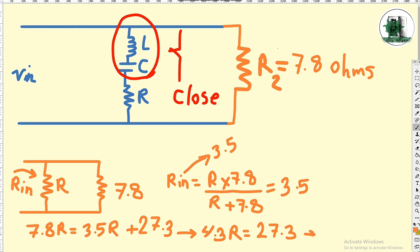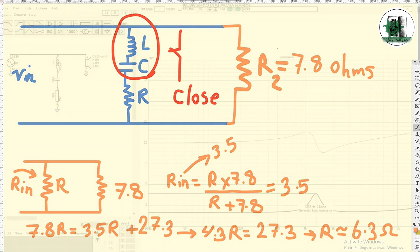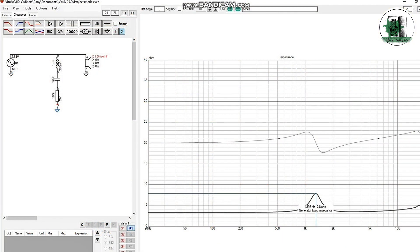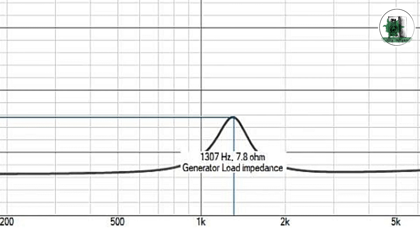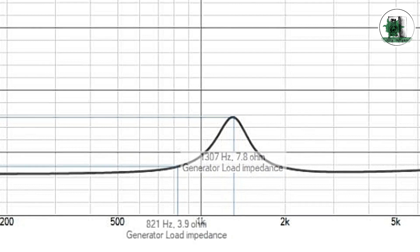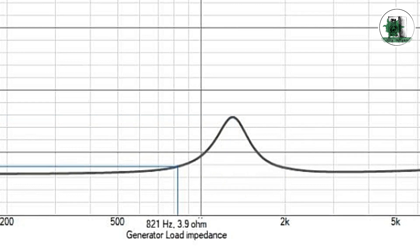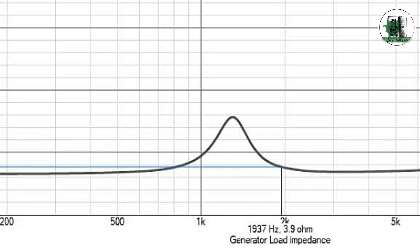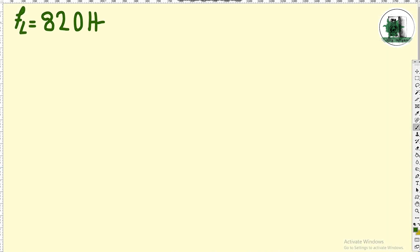Now let's go to the calculation of L and C. The filter bandwidth and its higher and lower frequencies can be calculated by experimental values. You can divide the peak value by 2 and note the frequencies corresponding to this value, or divide the DC resistance by 0.707 and do it again. The results won't be the same, but you can try both. 7.8 divided by 2 equals 3.9. F1 is 820 Hz and F2 is about 1930 Hz.